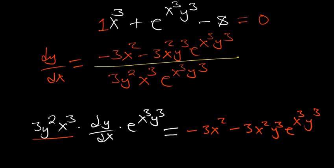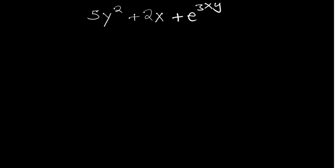After dividing, dy/dx equals negative 3x²y³ · e^(x³y³) divided by 3y²x³ · e^(x³y³). We have now made dy/dx the subject and successfully differentiated using implicit differentiation. Now a second practice question: 5y² + 2x + e^(3xy). We go direct — differentiating 5y² gives 10y dy/dx.